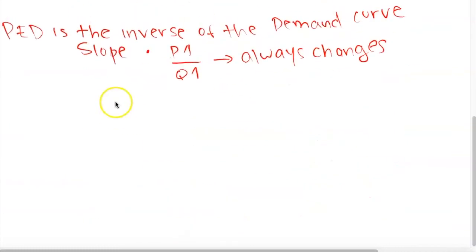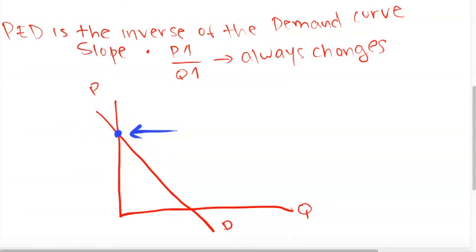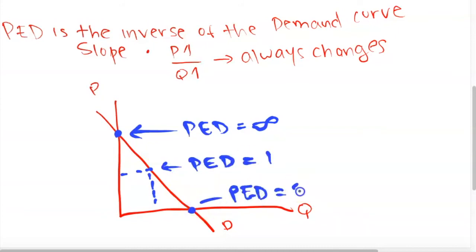Here's a graph showing PED at each point of the demand curve. Where the demand curve intersects the Y-axis, PED is infinitely elastic because quantity is zero at that point — P1 over Q1 (which is zero) equals infinity. When price and quantity are equal, PED equals one. Where the demand curve intersects the X-axis, PED equals zero because price is zero there, and zero over any quantity is zero. Beyond that point it becomes negative, so it is inelastic.